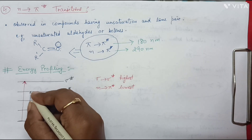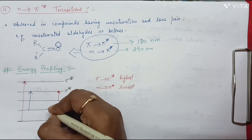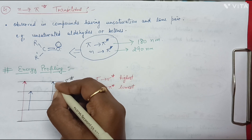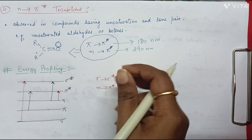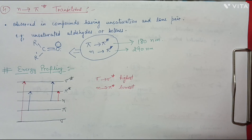Now, what about the energy gap between pi to pi star and n to sigma star? Because pictorially they both look similar, so in which case is the energy gap highest? We need to discuss that, and for that we have two scenarios.